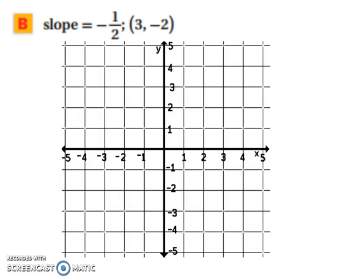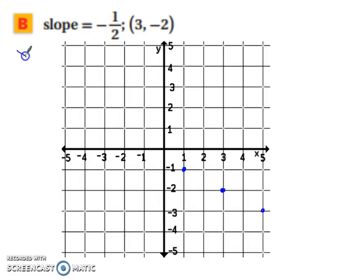Try this next one on your own. Now let's try it together. Start by plotting the point (3, -2). Now we're going to rise and run our slope — up 1 to the left 2, or down 1 and to the right 2. If you're not sure which way to go, it's a negative slope so your line should go in a downward pattern.